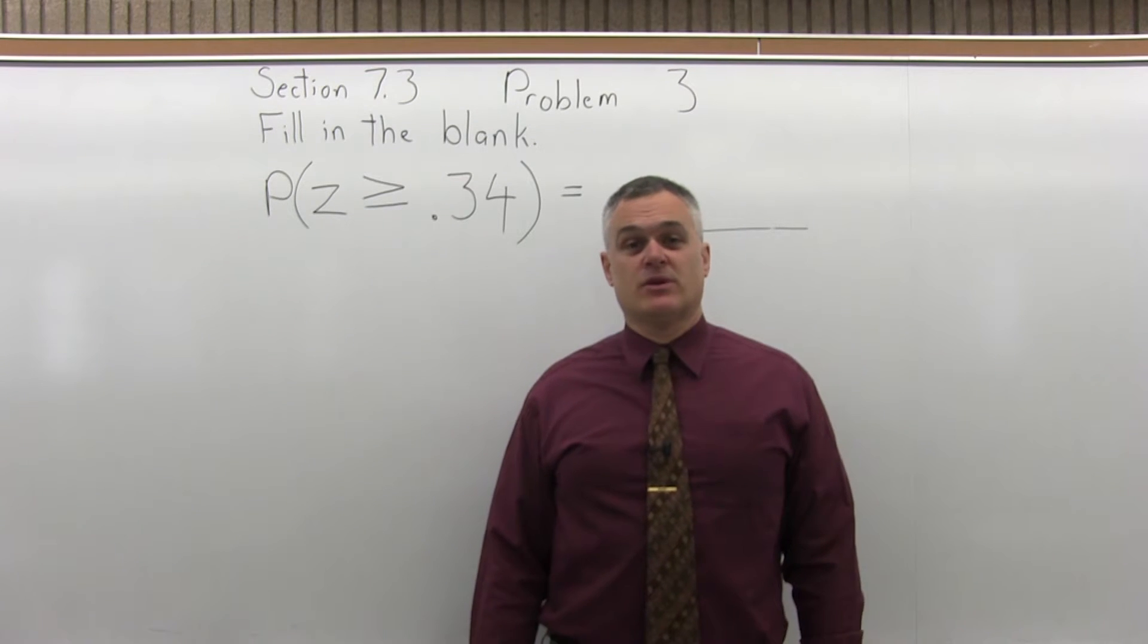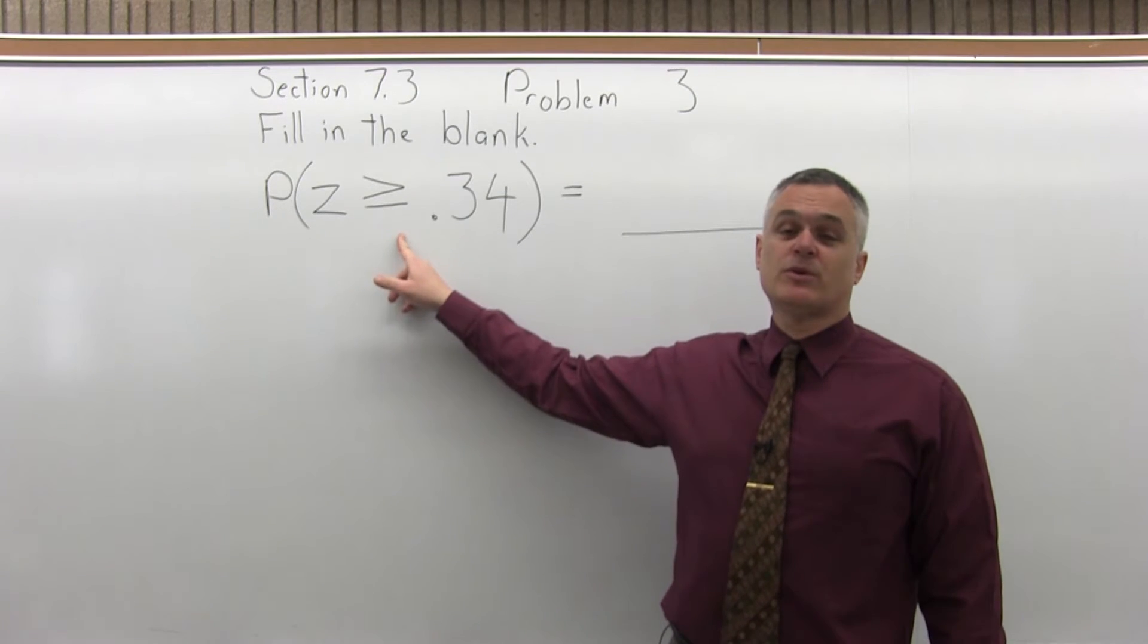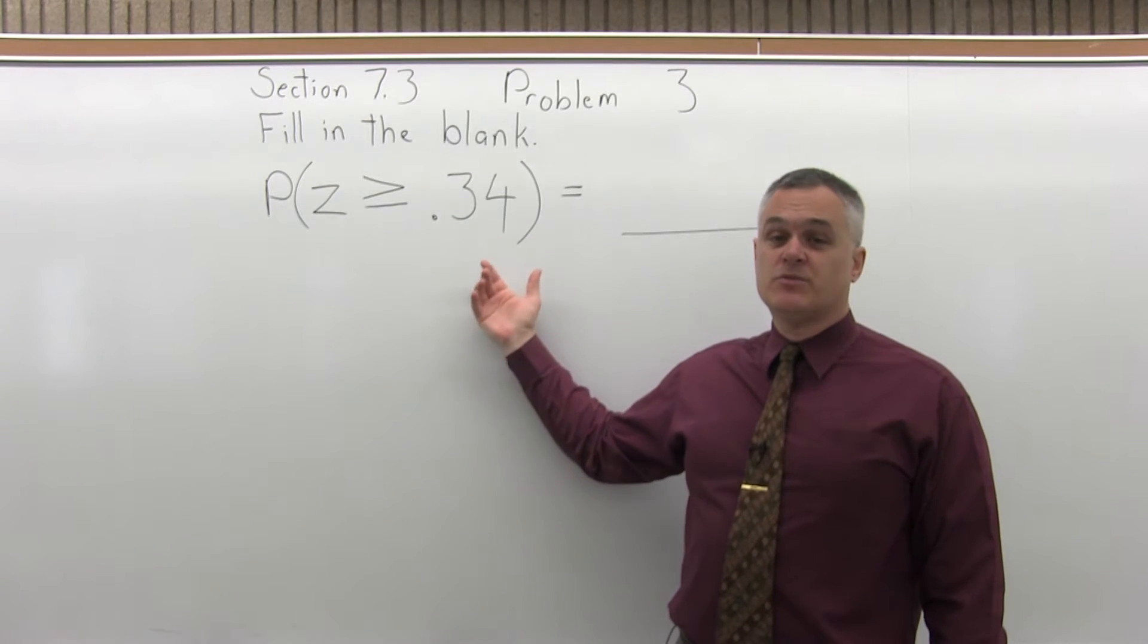This is Section 7.3, Problem number 3. It says fill in the blank: the probability that Z is greater than or equal to .34 equals blank.